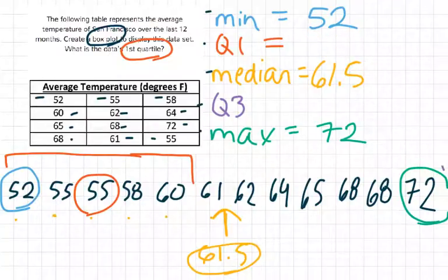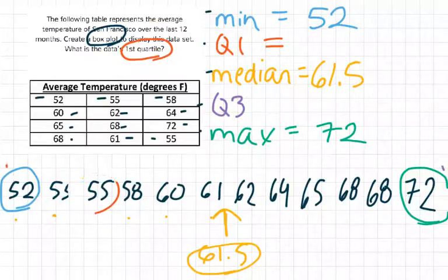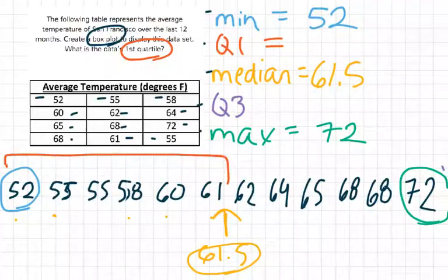Quartile one is not 55. I missed part of our data there. So let's see, what do we have here? Quartile one, what I was supposed to do is take all of this here. I had six values, so quartile one should actually be in the middle of 55 and 58.